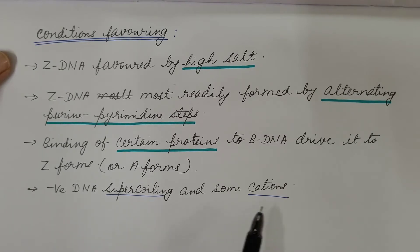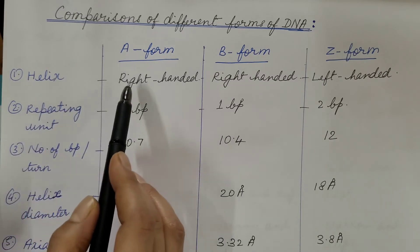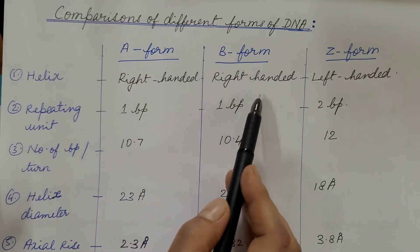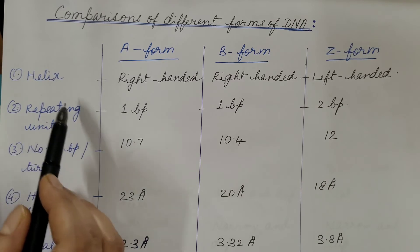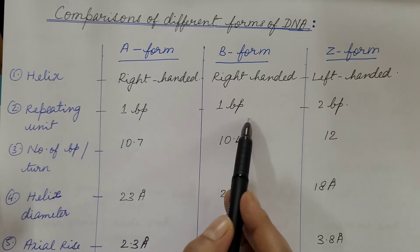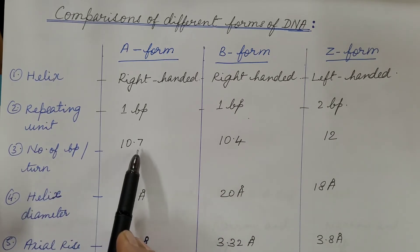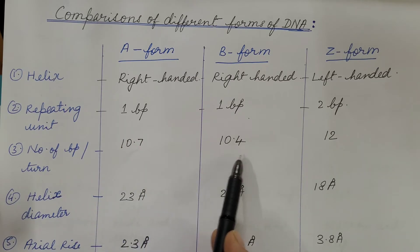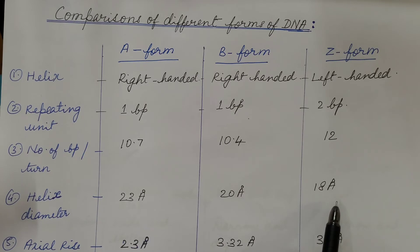Negative DNA supercoiling and some cations also favour Z-DNA. Now let us compare A, B, and Z forms of DNA. Regarding helix handedness: A-form is right-handed, B-form is right-handed, and Z-form is left-handed. Repeating unit: A-form and B-form each have one base pair, while Z-form has two base pairs. Number of base pairs per turn: A-form is 10.7, B-form is 10.4, and Z-form is 12. Helix diameter: A-form is 23 Å, B-form is 20 Å, and Z-form is 18 Å — so A-form is the broadest and Z-form is the narrowest.